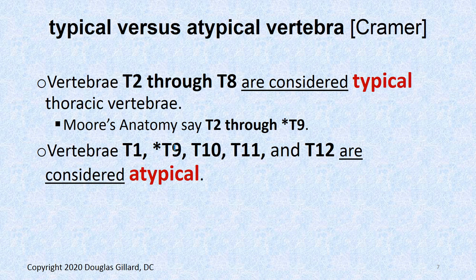Typical versus atypical: the typical run-of-the-mill vertebrae are T2 through T8. There are some oddballs — wait till we get to the cervical spine with C1 and C2. But for testing purposes, T1, T9, T10, T11, and T12 are considered atypical.